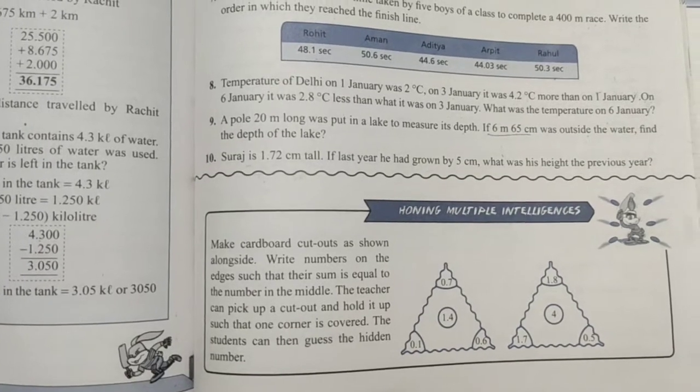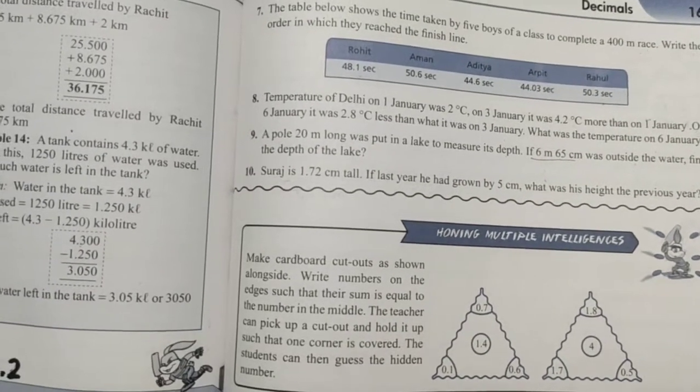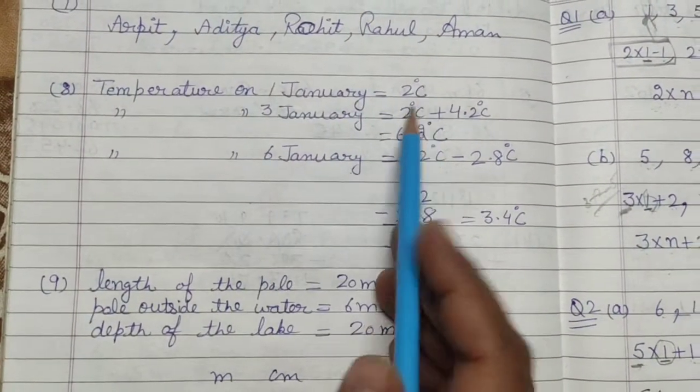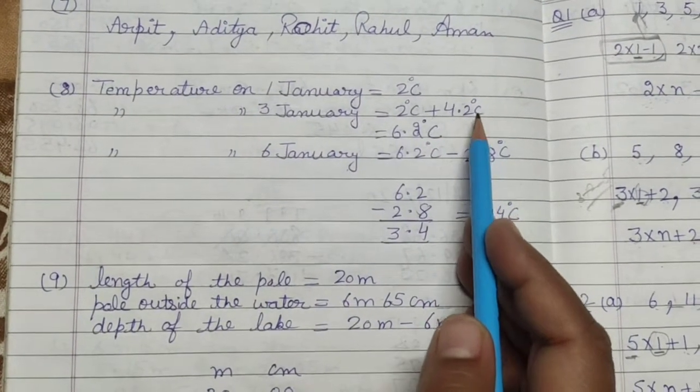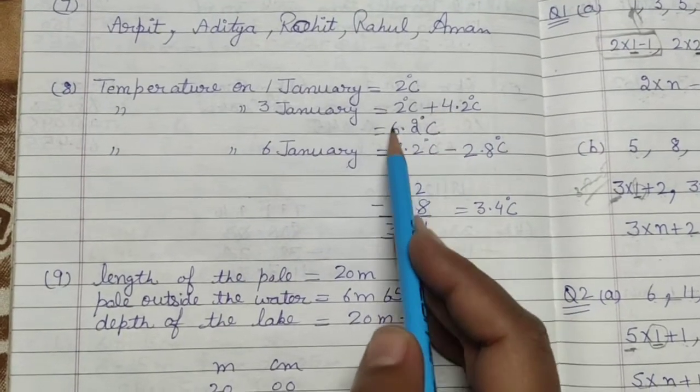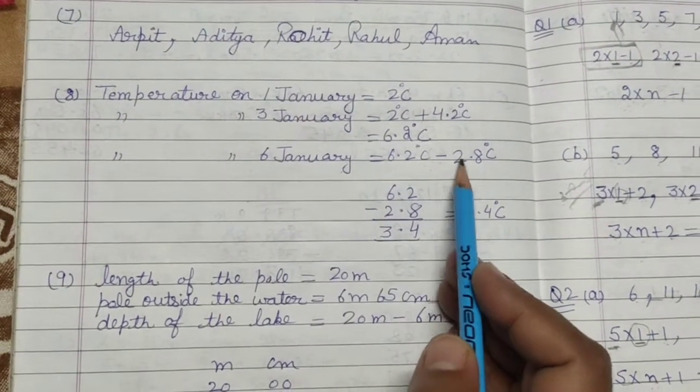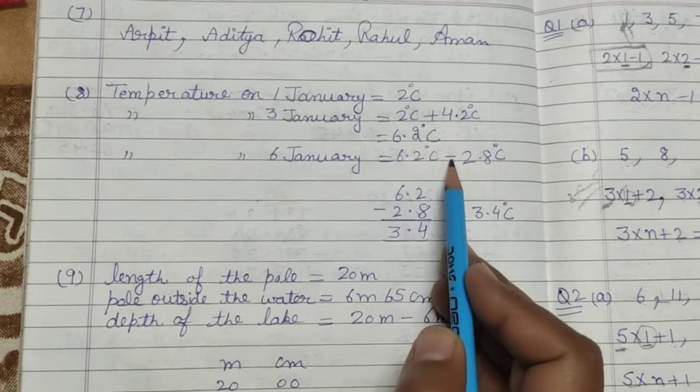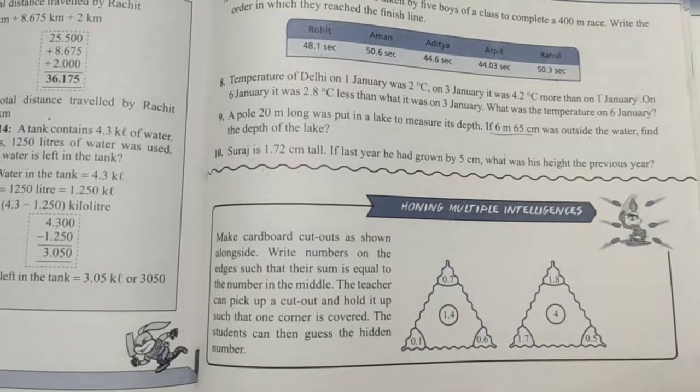So they told us 1st January, then 3rd January, and finally we are asked about 6th January. So they mentioned the temperature on 1st January is 2 degrees Celsius. So for 3rd January, the temperature was 4.2 degrees Celsius more. This means that I will add 4.2 degrees Celsius to 2 degrees Celsius. So this means 6.2 degrees Celsius.